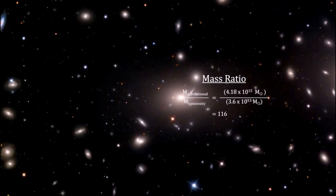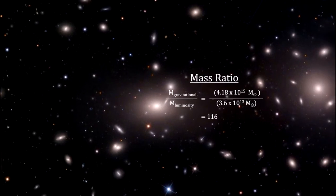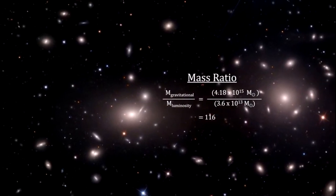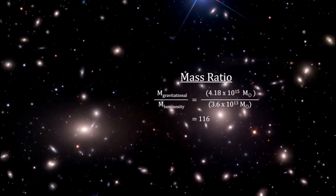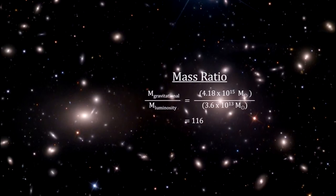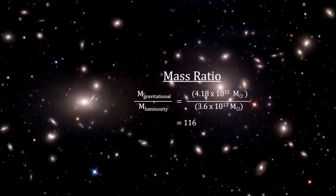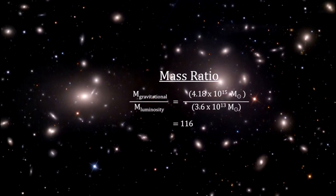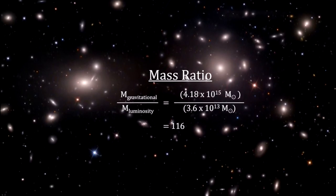In other words, the motion of the galaxies in the cluster indicated a mass that was over a hundred times the mass from luminous matter. Zwicky concluded that either the laws of gravity as we know them, Newton's and Einstein's, did not work for volumes as large as the Coma cluster. Or, the luminous matter is only a very small part of the total matter of the cluster. He called the rest of the matter dark matter and suggested that gravitational lensing could help quantify this dark matter.